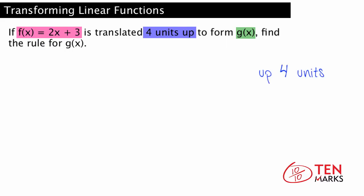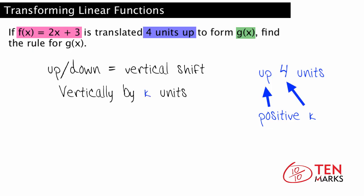Here f is translated up 4 units, so k in this case is positive. When you move up or down, that's a vertical translation. And since it's a vertical translation, k will be added to the output f. So g equals f plus k, and g equals 2x plus 3, the original f, plus 4, which is k, thus g equals 2x plus 7.